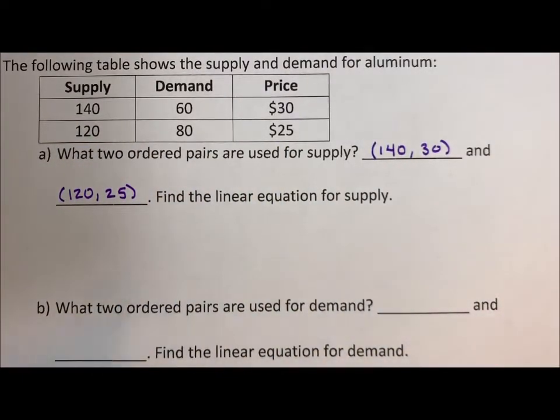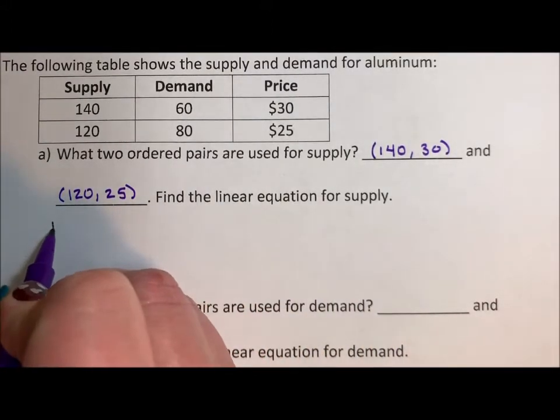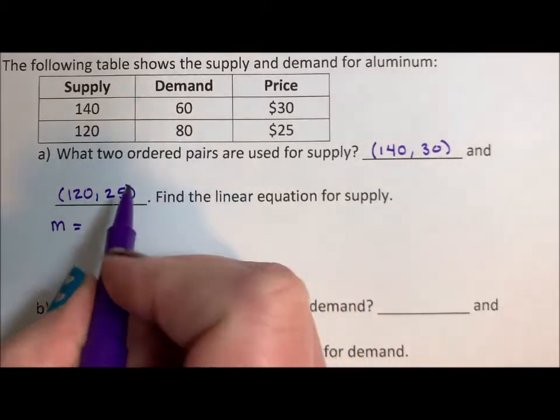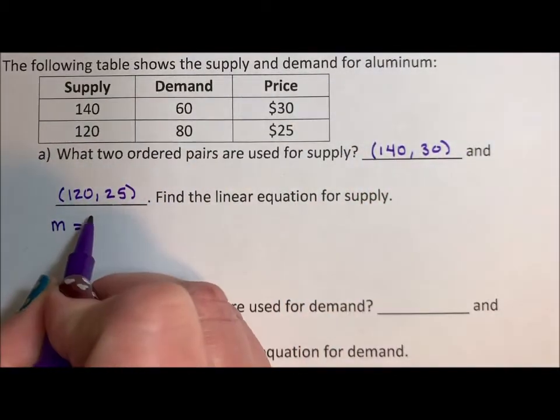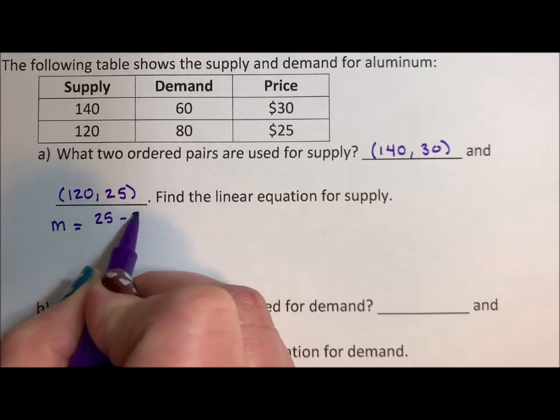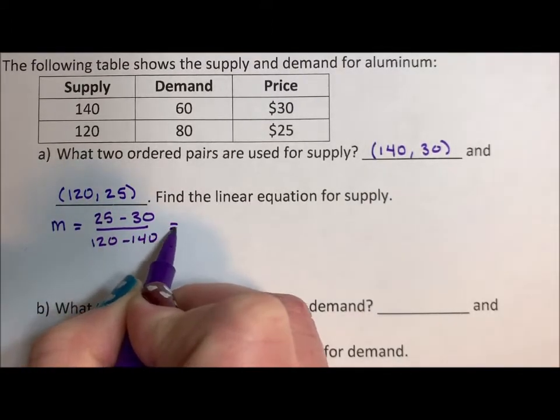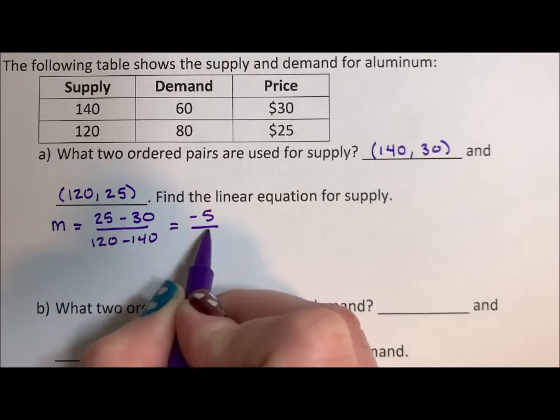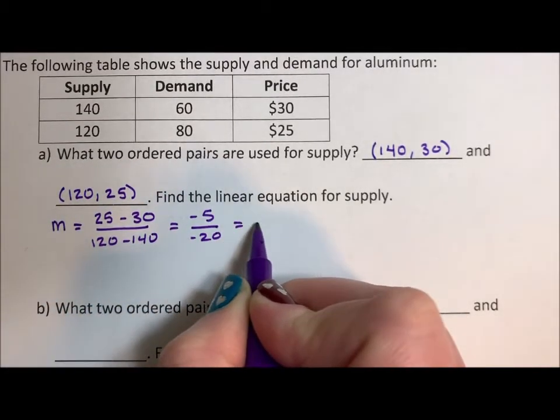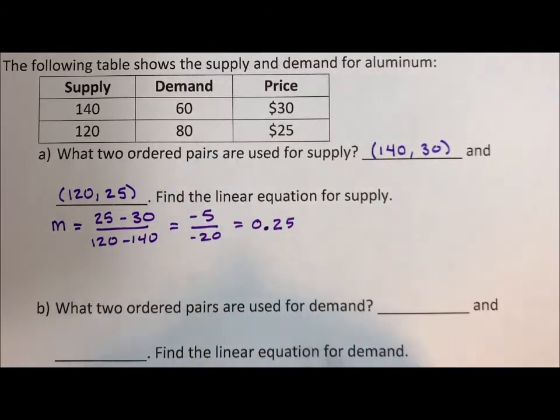Find the linear equation. So this is just finding an equation of a line between two points. We are going to use the variable p for both of our outputs and just x for our input. So we'll start with slope. Slope is, let's see, this is our second point, this is our first, so we'll say 25 minus 30 over 120 minus 140, which is negative 5 over negative 20. And we are going to go to decimal. For those of you who know me, I love fractions, but because this is an application, we will actually go to decimal.